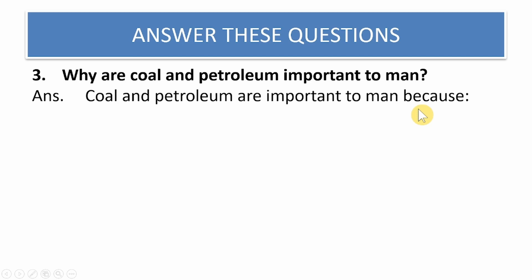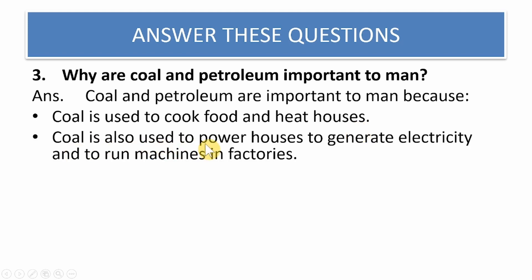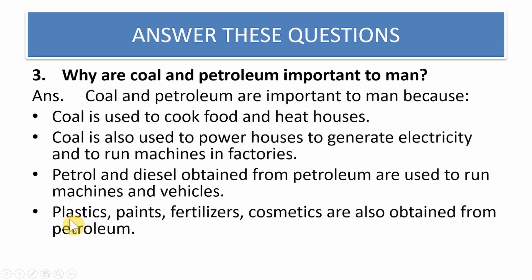Why are coal and petroleum important to man? Coal is used to cook food and heat houses. Coal is also used to generate electricity and run machines in factories. Petrol and diesel obtained from petroleum are used to run machines and vehicles. Plastics, paint, fertilizers, and cosmetics are also obtained from petroleum.